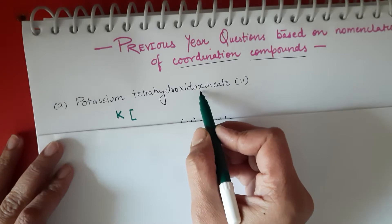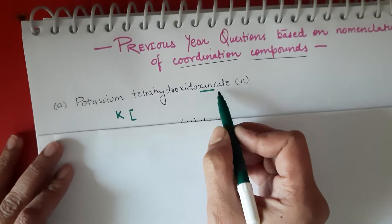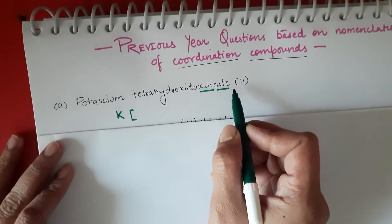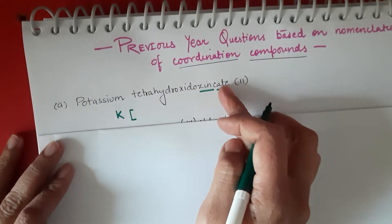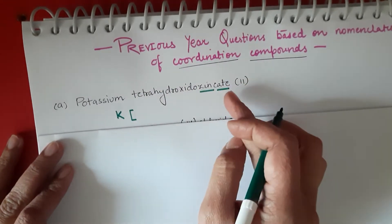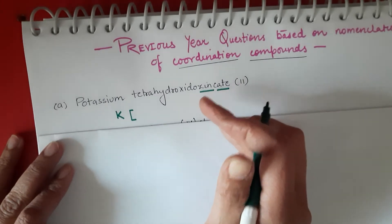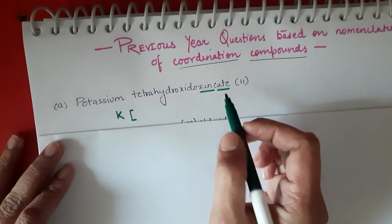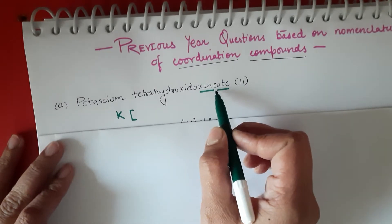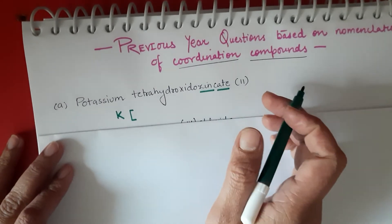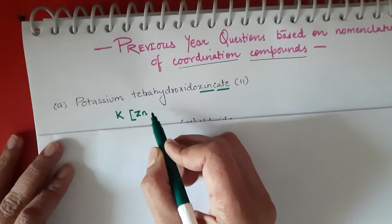Then, as you know, we write the ligand and central metal atom in square brackets. Here the central metal atom is zinc. It is used because the coordination sphere is negatively charged — it's a rule that if the coordination sphere is negatively charged, we add '-ate' to the central metal atom name. So the central metal atom is zinc here.